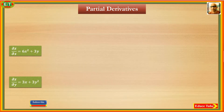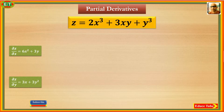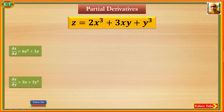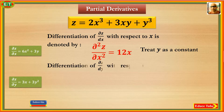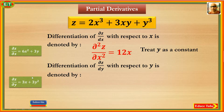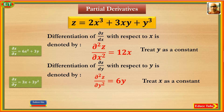Now these two first partial derivatives can be used to find second partial derivatives. We can find the second partial derivative by differentiating the first partial derivative ∂z/∂x with respect to x, giving ∂²z/∂x² equal to 12x, treating y as a constant. Again, the second partial derivative can be found by differentiating with respect to y, giving ∂²z/∂y² equal to 6y.